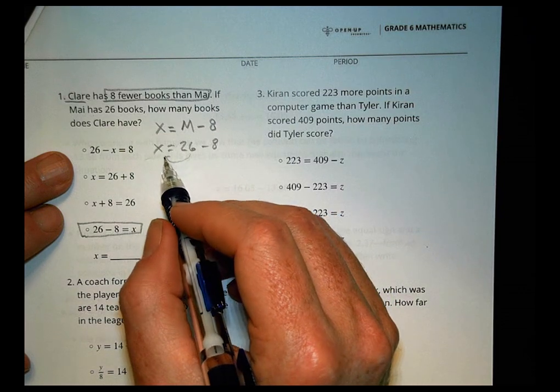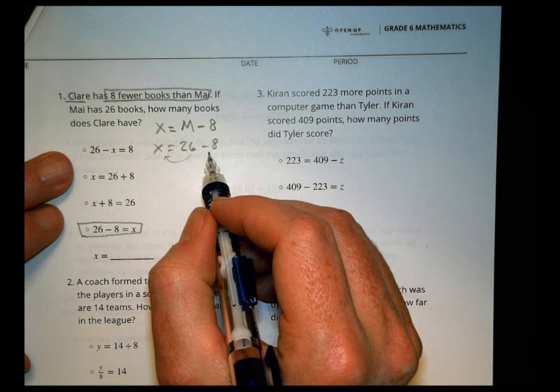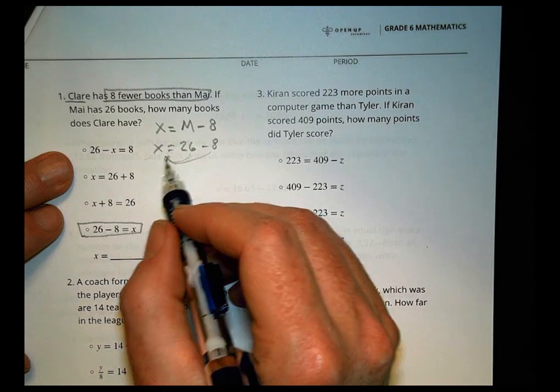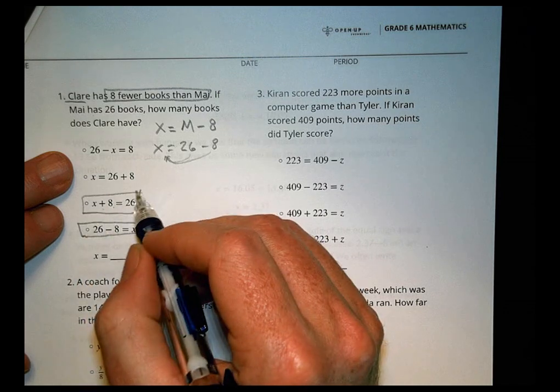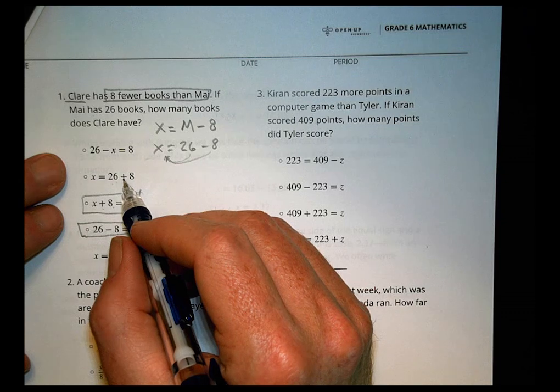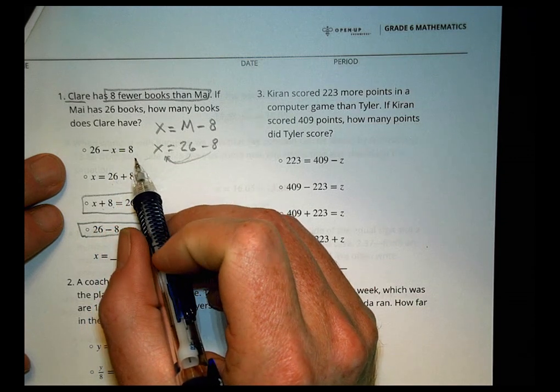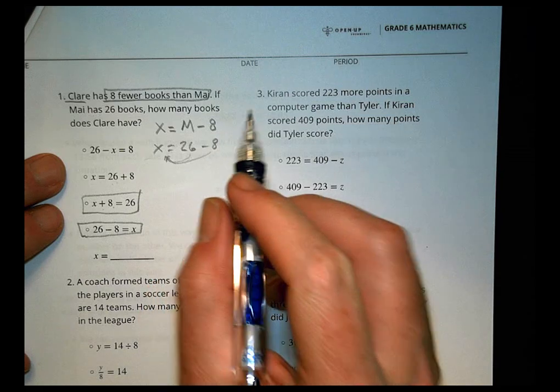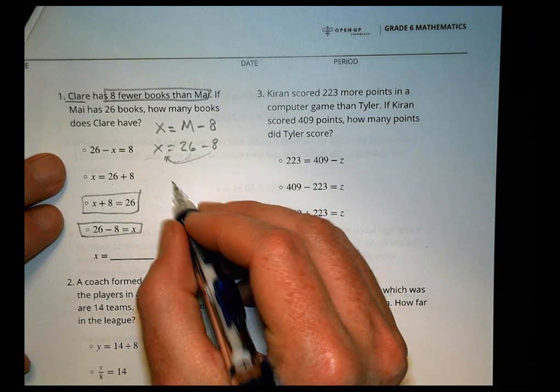But we have to find all the ones that can be the same. So can I get 26 minus x in any way? No, I can't. And if I put the 26 over there, I'm subtracting, that'd be x minus 26 equals eight. So that's not going to work there. What if I put the eight over there? I would add eight to x. I see x plus eight equals 26. So that would work.